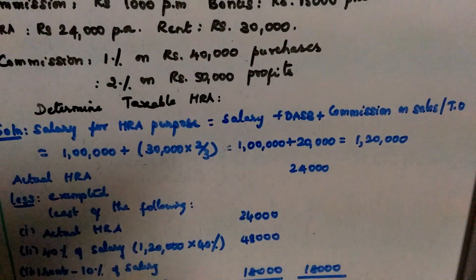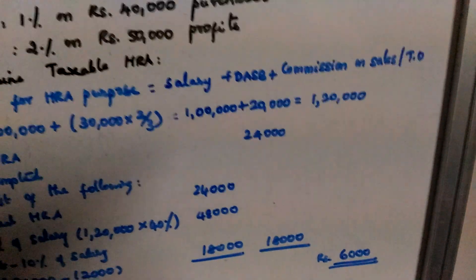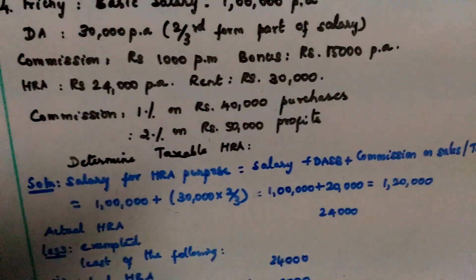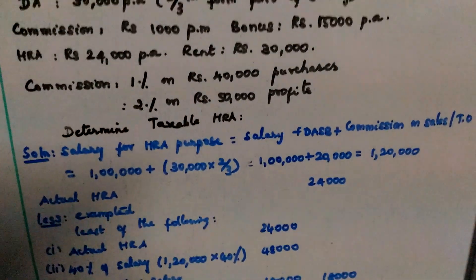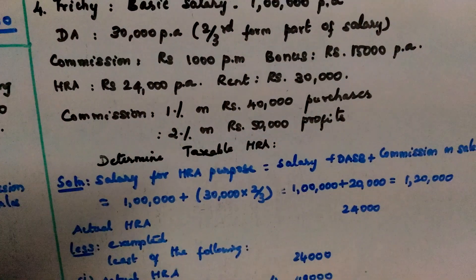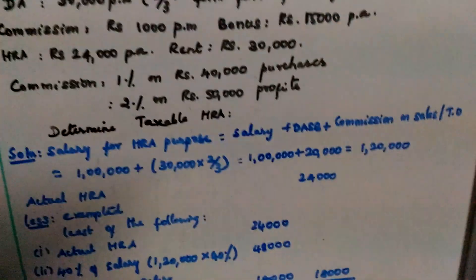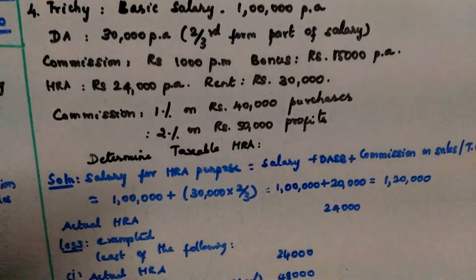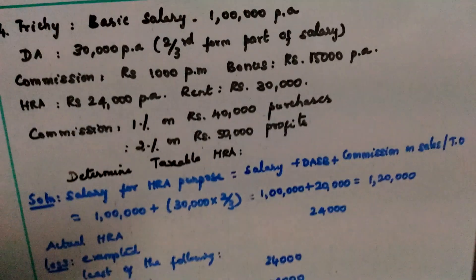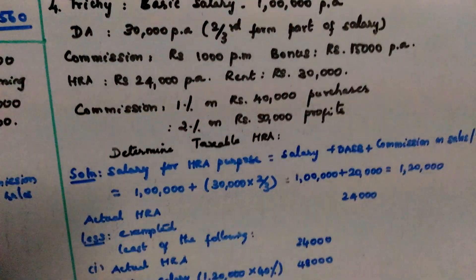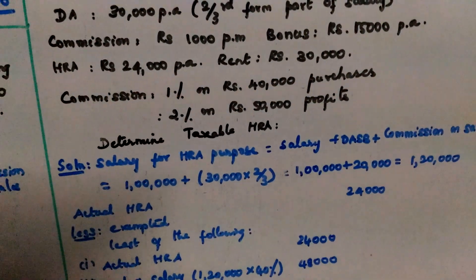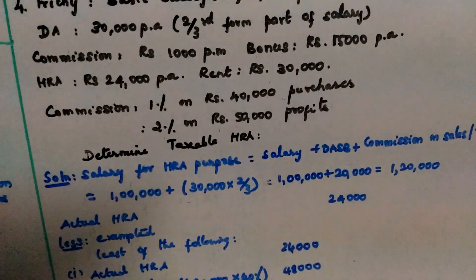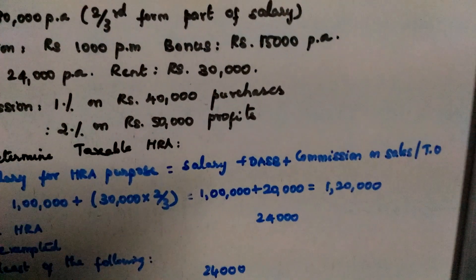Salary for HRA purpose: Basic salary + DA (forming part of salary) + Commission on sales/turnover. Salary is Rs. 1 lakh per annum. DA forming part of salary is 2/3 of Rs. 30,000 = Rs. 20,000. Fixed commission is Rs. 1,000. Commission on purchases (1%) and profits (2%) are included. Bonus is excluded. DA is 2/3 part of salary, so it is included in salary for HRA purpose.